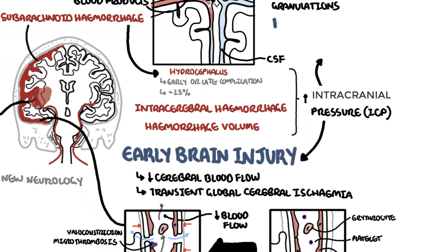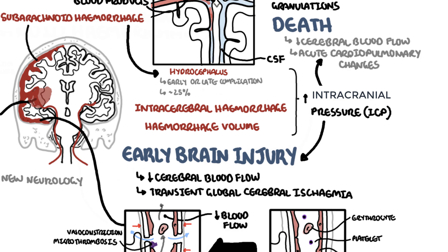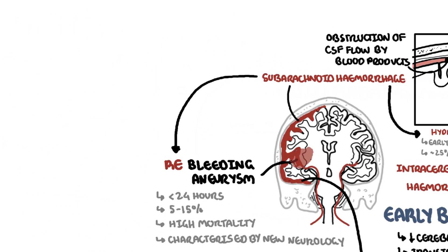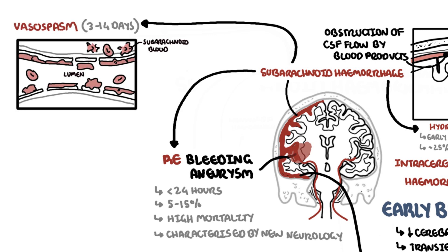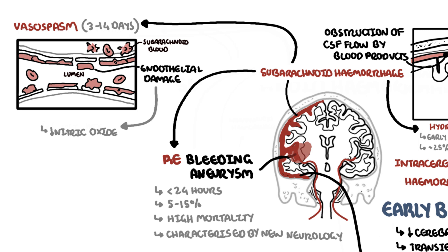Over time, an increase in intracranial pressure causes death due to reduced cerebral blood flow and acute cardiopulmonary changes. Another common complication of subarachnoid hemorrhage is vasospasm, which occurs 3 to 14 days after the injury. Vasospasm is where the blood vessels in the brain spasm, causing altered neurological status. Vasospasm is thought to result from lysis of subarachnoid blood and damaged endothelial cells, causing reduced nitric oxide production and increased endothelin production, leading to the vasoconstriction we see.